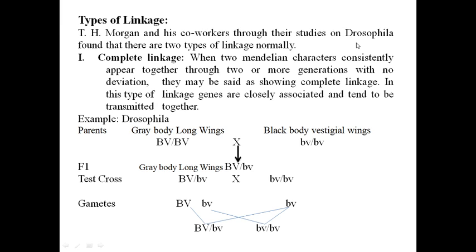TH Morgan and his co-workers, through their studies on Drosophila, found that there are two types of linkages. TH Morgan is the big name in linkage theory. He studied Drosophila and said there are two types: one is complete linkage, meaning completely linked genes that do not get separated.